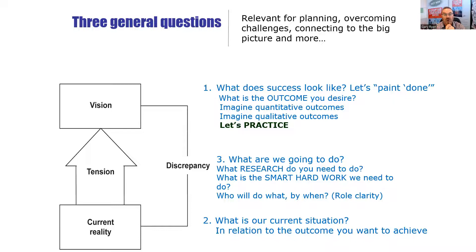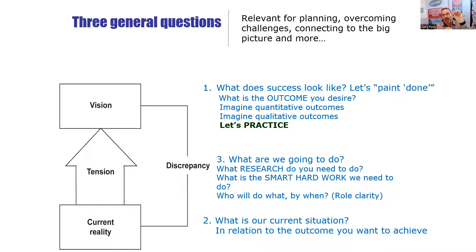The first action you need to do is find some things out — you need to do some research. What we're going to learn in session three is about what smart hard work is. You're going to need to do some research to find out what work you need to do — but what's the smart hard work you're going to need to do to move you from your current reality to that vision or goal? And of course, who will do what by when, which is the role clarity that comes along with your event planning or planning for anything, including portfolios rolling along throughout the year.